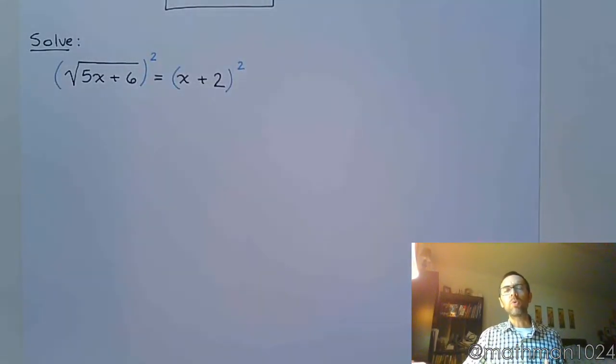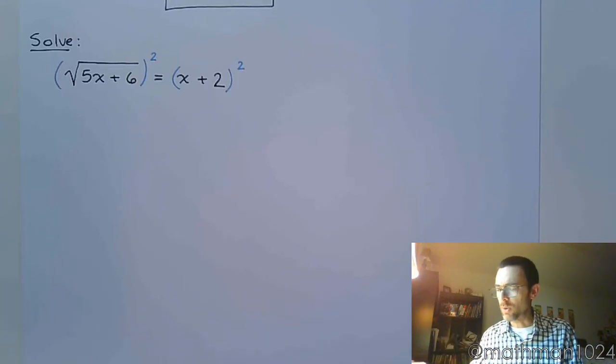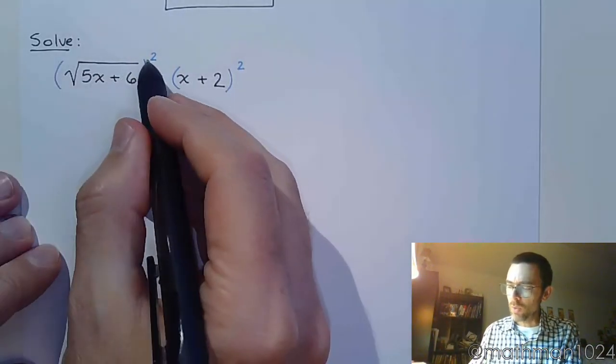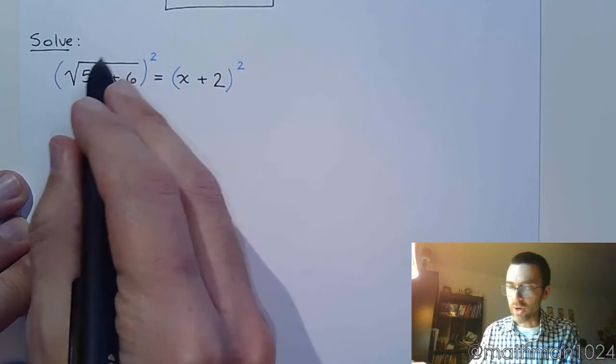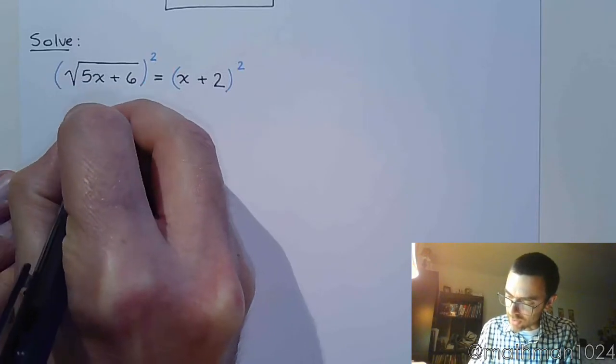Now, notice what we're doing here. We are raising each side to the power of 2. We're not raising each piece. That's very important, particularly on the right side of the equation. When you square this radical, the square root kind of reduce each other away, and we are left with 5x plus 6.